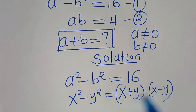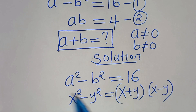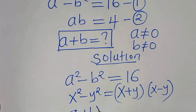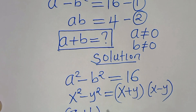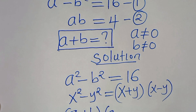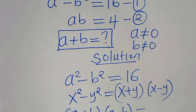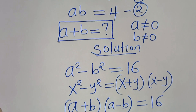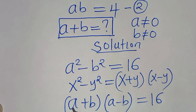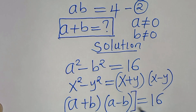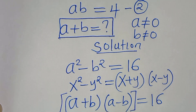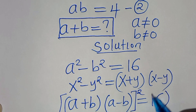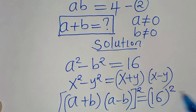Applying this identity, we have a plus b times a minus b equals 16. The next step from here: let's square both sides, so this is 16 raised to the power of 2.